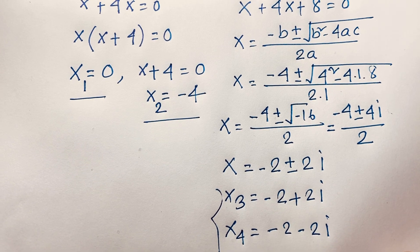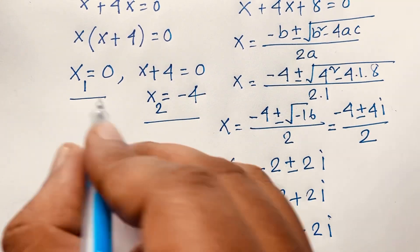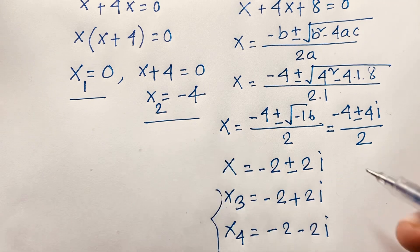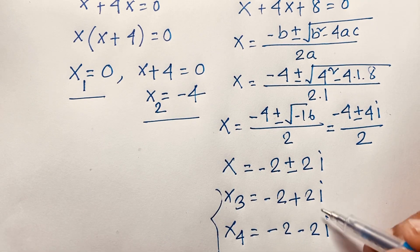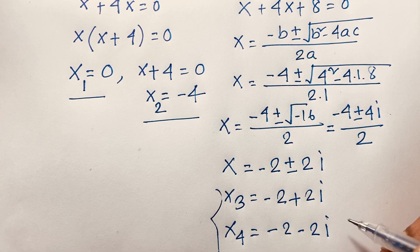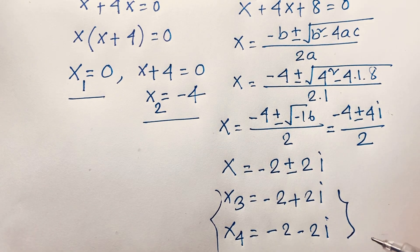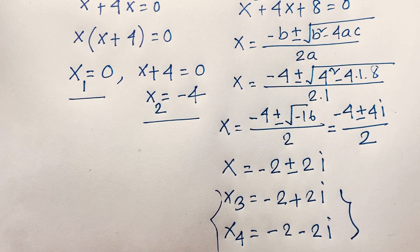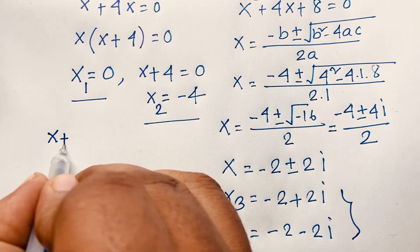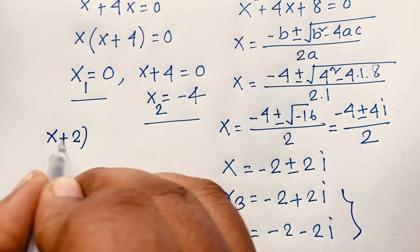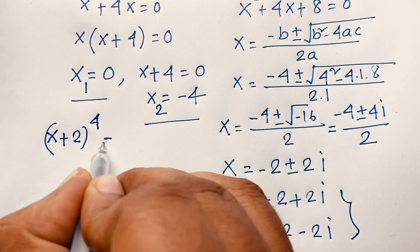So our final answers are: x1 equals 0, x2 equals negative 4 — these are real solutions — and x3 equals minus 2 plus 2i, x4 equals minus 2 minus 2i, which are complex solutions with an imaginary part. Our original question was: x plus 2, bracket to the power 4, equals 16.